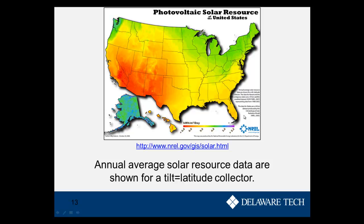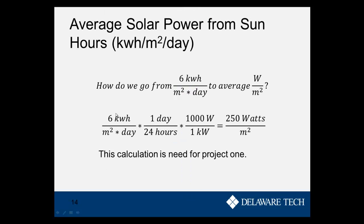For your project, you'll need to convert kilowatt hours per meter squared per day into average watts per meter squared. Another way to think about that unit is 'sun hours' — how many hours of bright sunlight per day on average. For example, starting with 6 kWh/m²/day, dividing by 24 hours per day and multiplying by 1000 watts per kilowatt gives 250 watts per meter squared. Make sure you know how to do this calculation for Project 1.